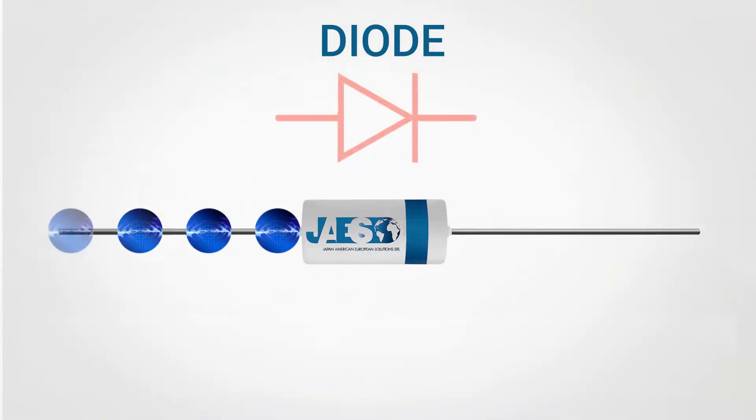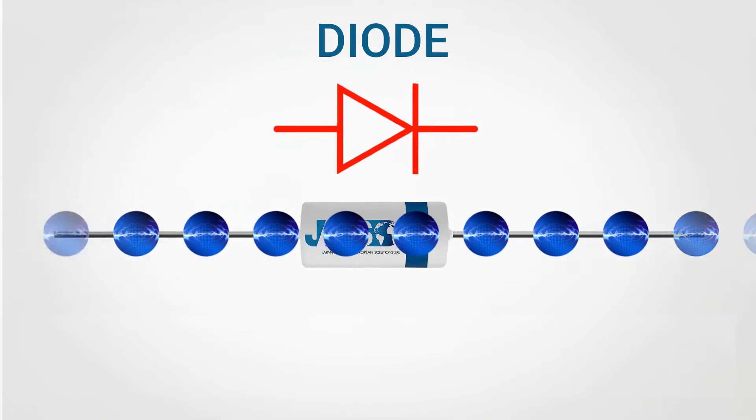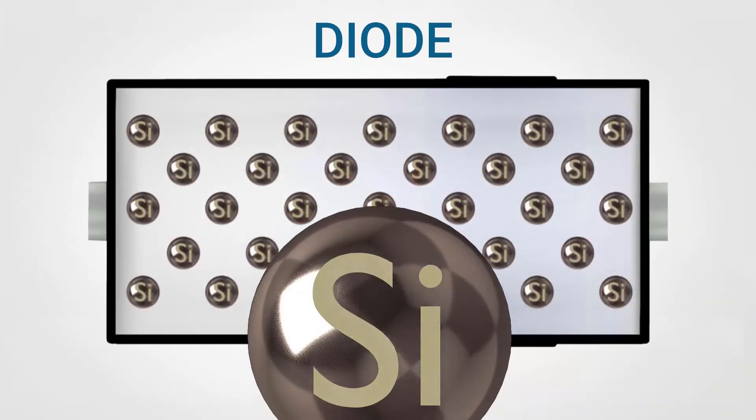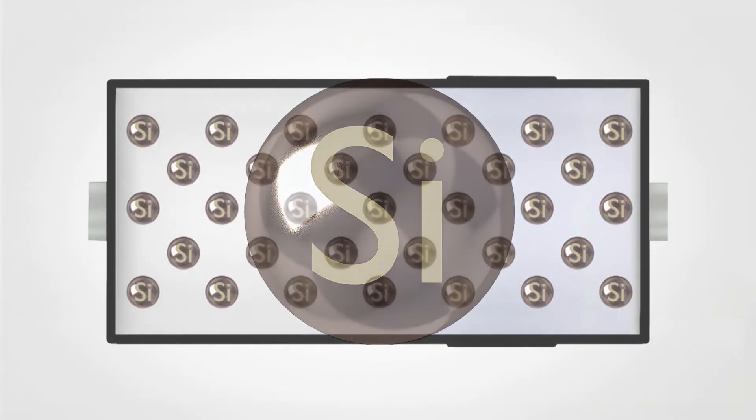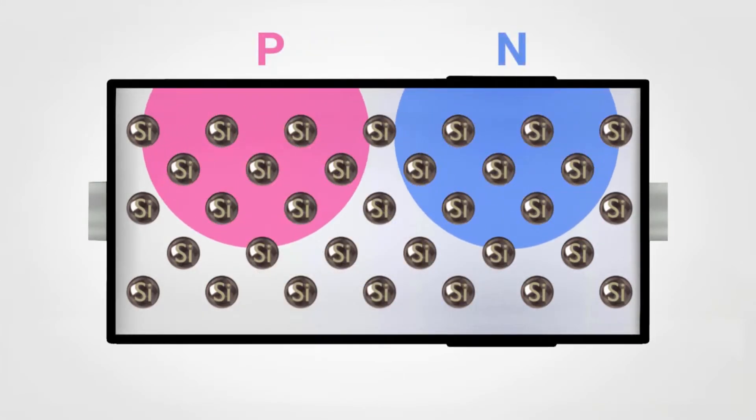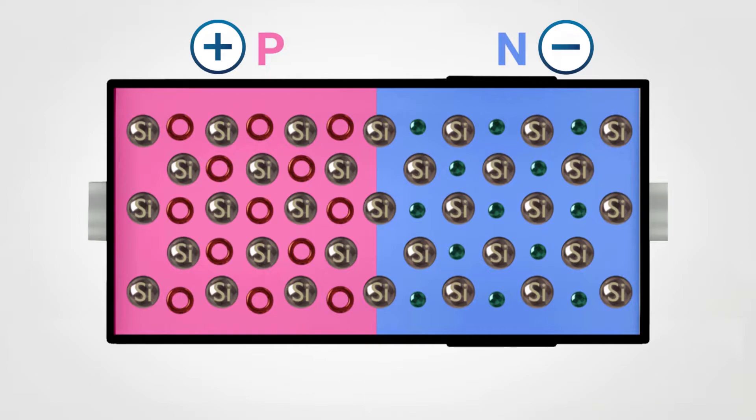The Diode. In our previous video about the diode, we explained how the silicon inside is doped so as to obtain two distinct parts with two different levels of charge distribution, namely the P-N junction.